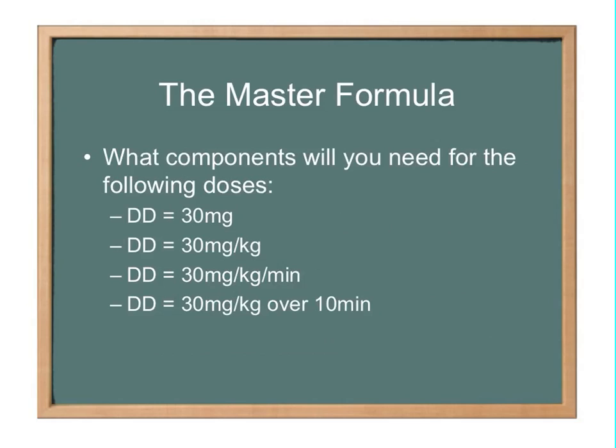There's different forms of desired doses, and that will guide you into what parts of the formula you're going to need. So if you just had a desired dose of 30 milligrams, it's going to be a very easy formula to compute. All you'll really need is your desired dose and your concentration. If you had 30 mg/kg, that's a weight-based dose, so you would obviously need to include the patient's weight.